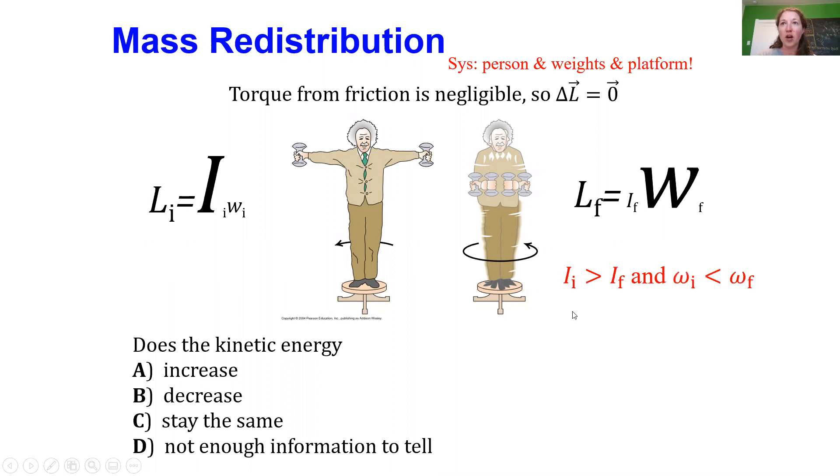So we already concluded from the fact that the angular momentum stays constant that as the moment of inertia decreases, then the angular speed should increase in order to keep the angular momentum constant.